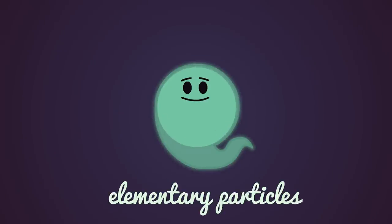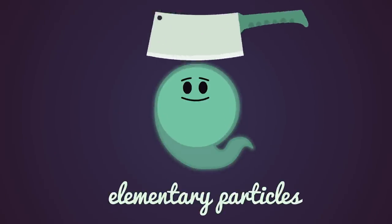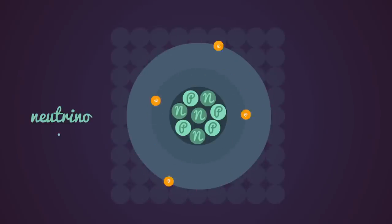Neutrinos are elementary particles, meaning that they can't be subdivided into other particles the way atoms can. Elementary particles are the smallest known building blocks of everything in the universe, and the neutrino is one of the smallest of the small.